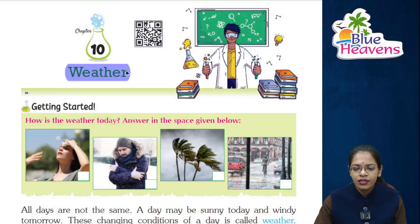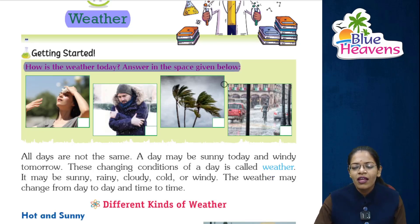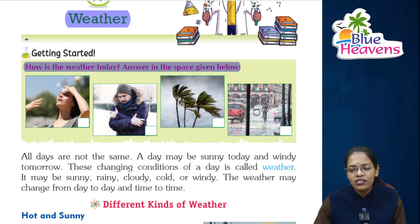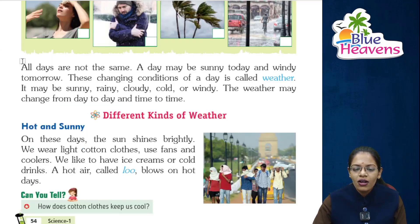Chapter 10 Weather — let's get a start. How is the weather today? Answer in the space given below. Students, look at all the images and identify which type of weather it is today. You can fill in the exercise yourself. The weather conditions are: first is summer, second is winter, third is autumn season, and next one is rainy season. Now let's read the chapter — you fill the exercise yourself.